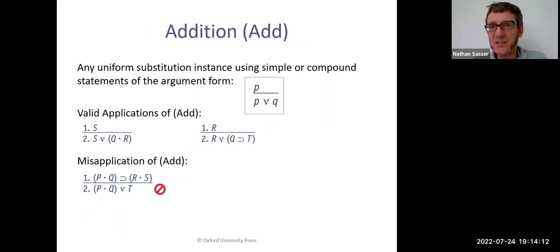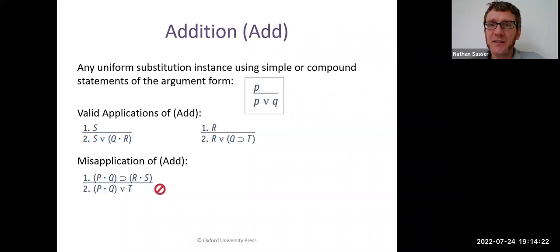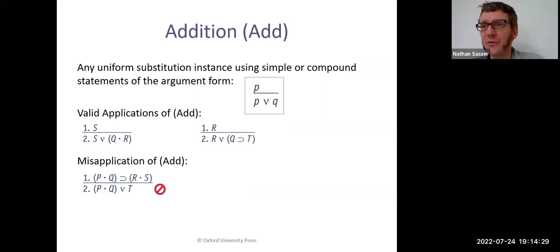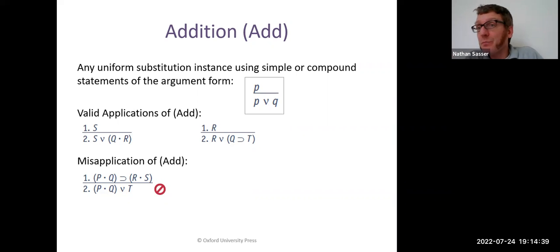Addition. The addition rule says if you've got a premise — any premise P — then you can conclude 'P or anything you want': P or Q. You can introduce a whole new simple statement or a whole new compound statement. Think about it: a disjunction says at least one of these things is true. So if you're already given that one of the things is true, then no matter how crazy and false the other disjunct is, you can make a disjunction out of them and it works.